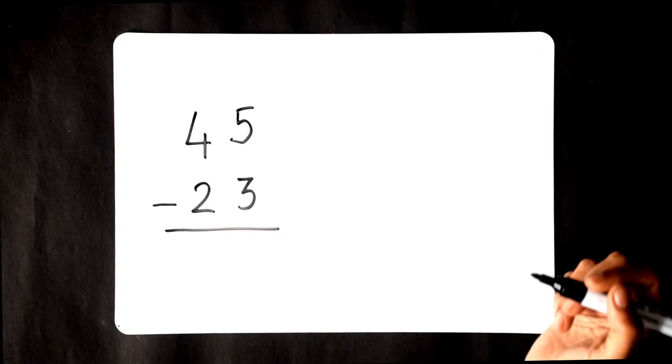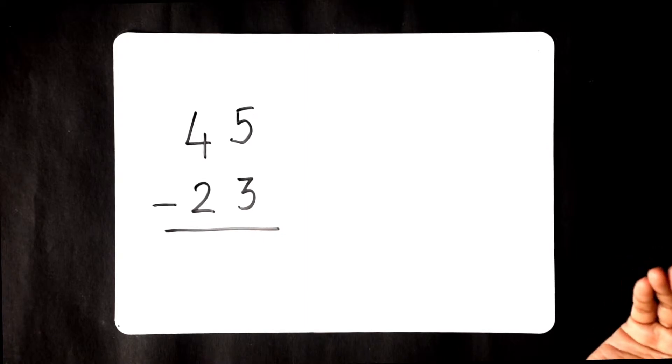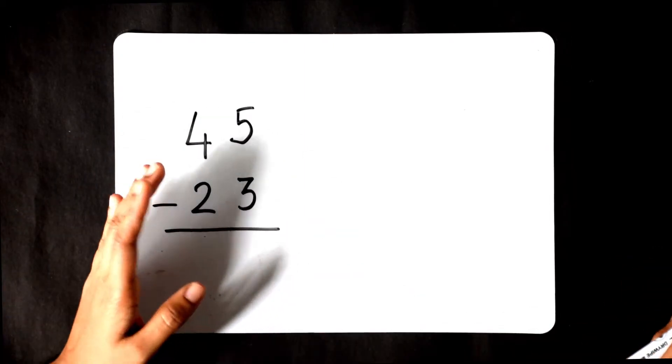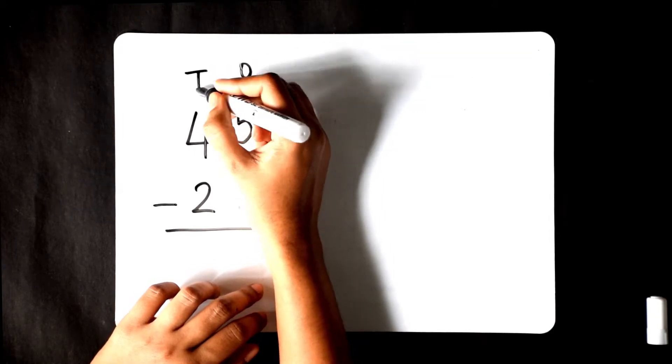Since we are using the pictorial approach, we are going to use pictures to represent the numbers. First let's denote ones and tens. These are the ones and these are the tens.